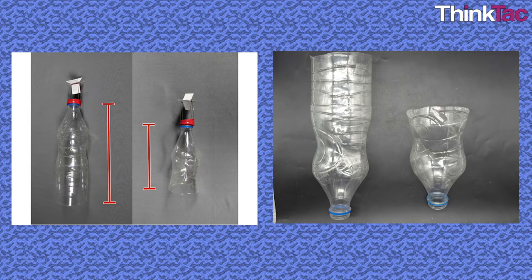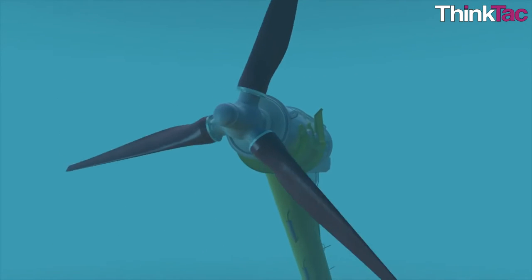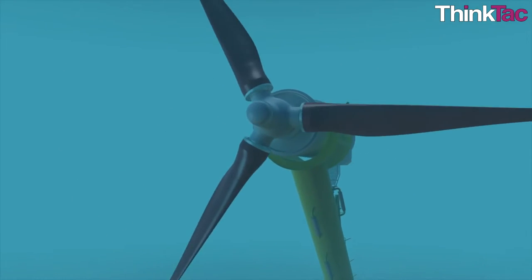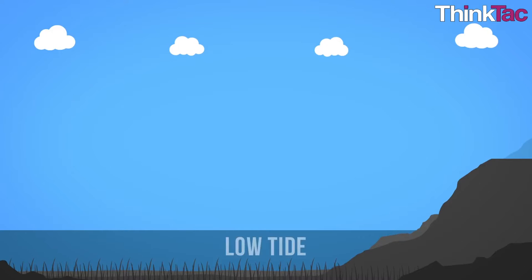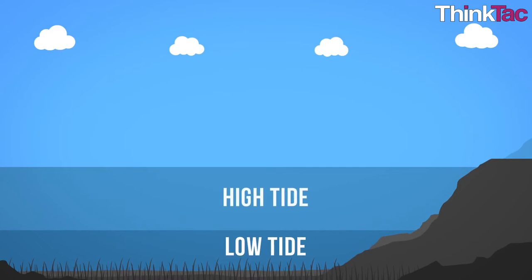If we increase the size of the bottle, keeping other factors constant, the velocity of rotation of the blades will increase. On the field, this makes it very important to choose a location where the tides show a great deal of variation.